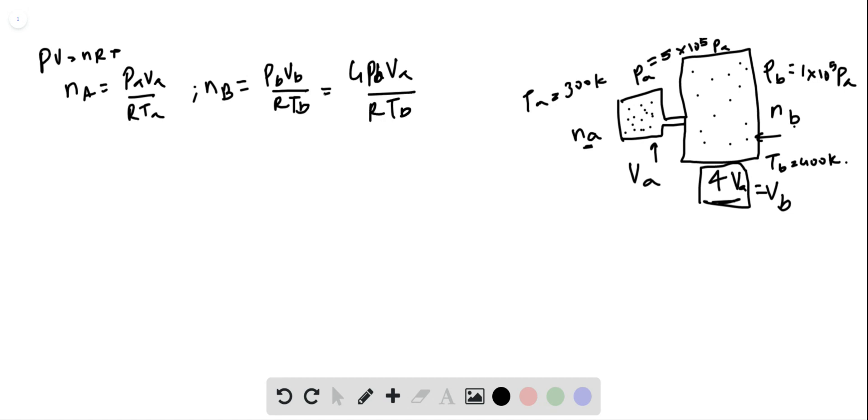Now, finally, after the exchange has happened, let us say the pressures are PA dash and PB dash. And the number of atoms, the amount of gas inside is NA dash and NB dash.